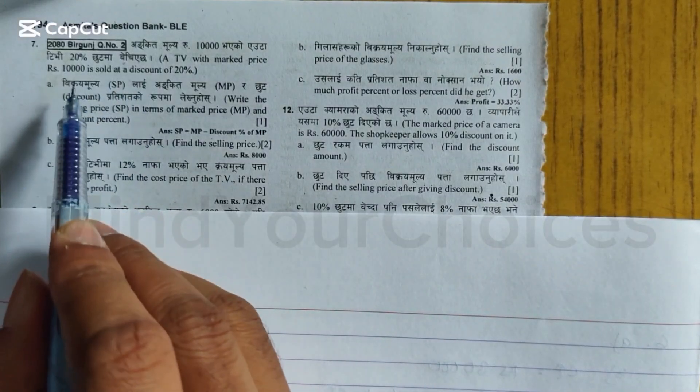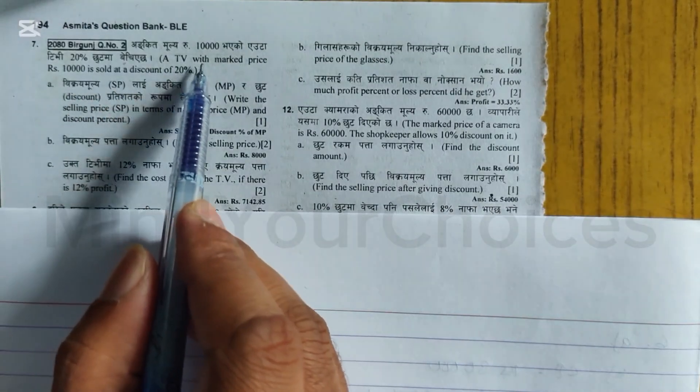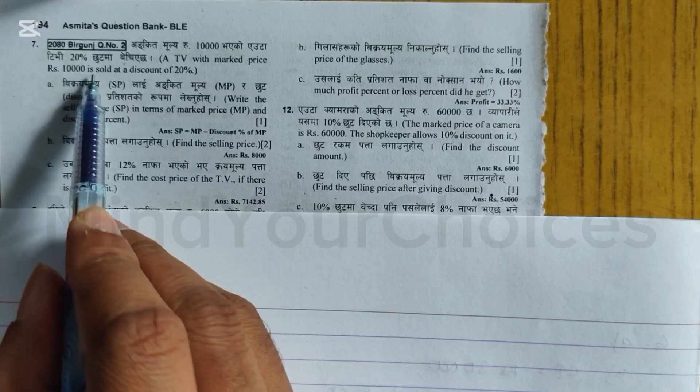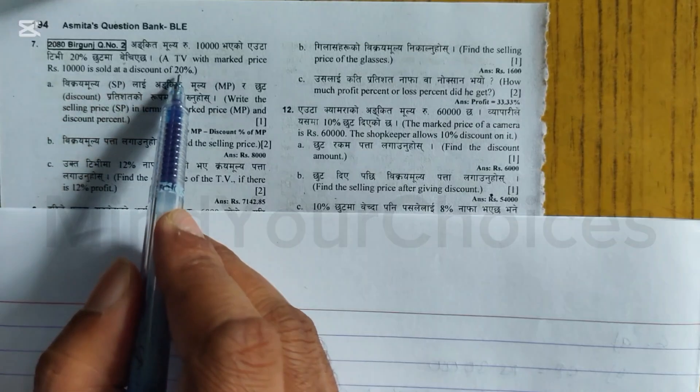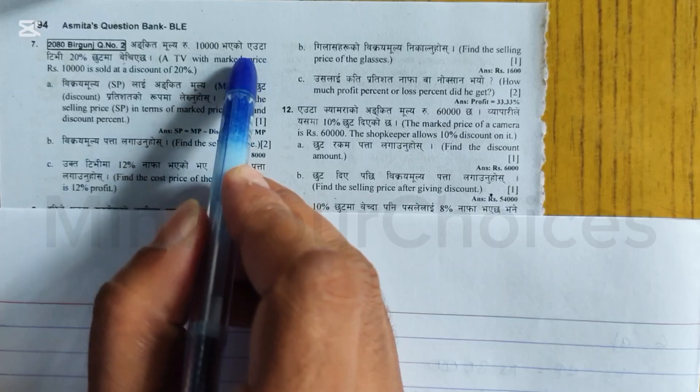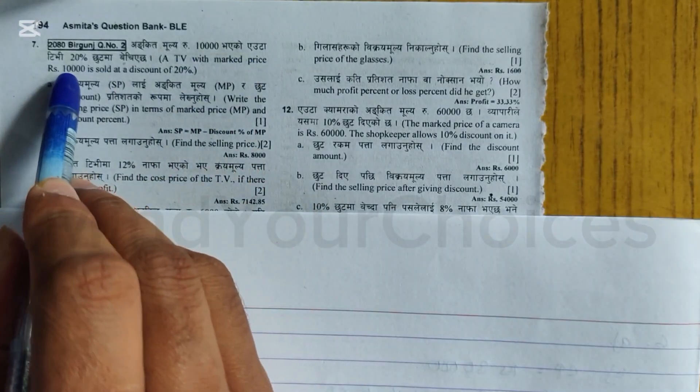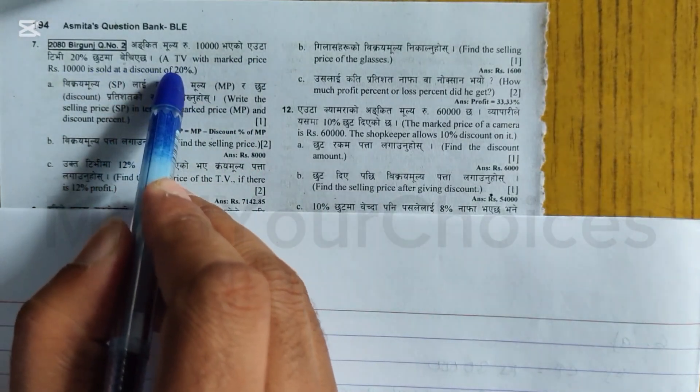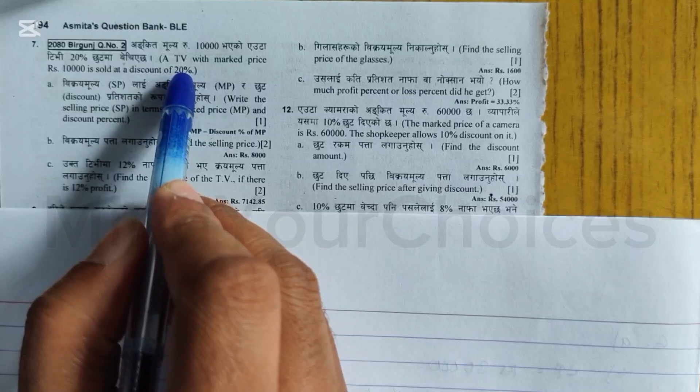Question number 7: You can see here a TV with marked price Rs 10,000 is sold at a discount of 20%. Mark price, advertisement price, selling price is sold at a discount of 20%.